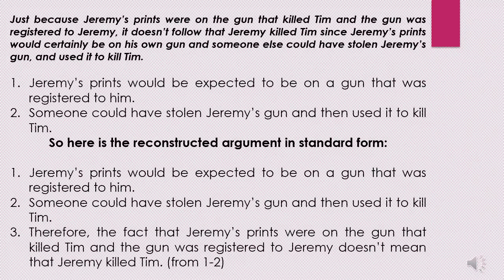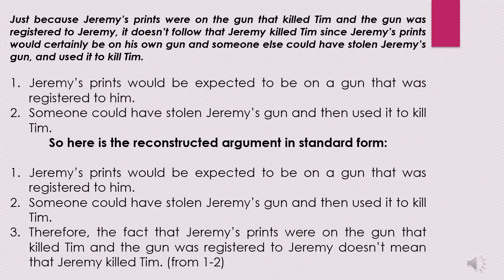Now let's try an example. Just because Jeremy's prints were on the gun that killed Tim and the gun was registered to Jeremy, it doesn't follow that Jeremy killed Tim, since Jeremy's prints would certainly be on his own gun and someone else could have stolen Jeremy's gun and used it to kill Tim. So what is the conclusion of this argument? The fact that Jeremy's prints were on the gun that killed Tim and the gun was registered to Jeremy doesn't mean that Jeremy killed Tim. This seems to be the essence of the main conclusion in the above argument.